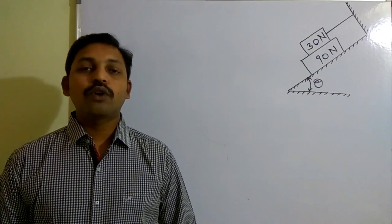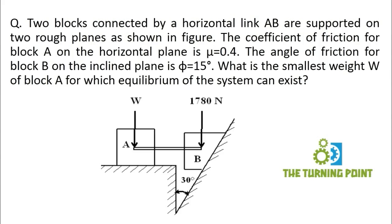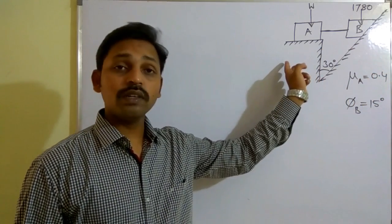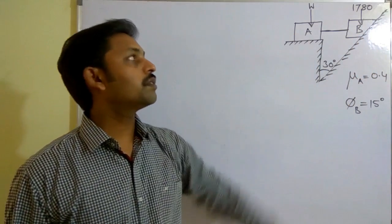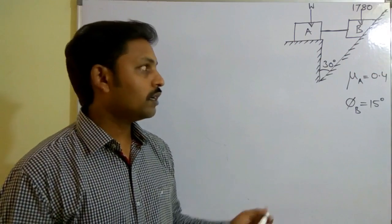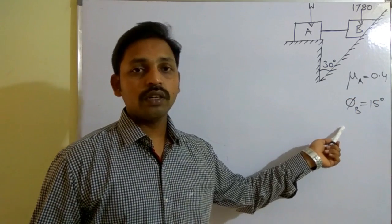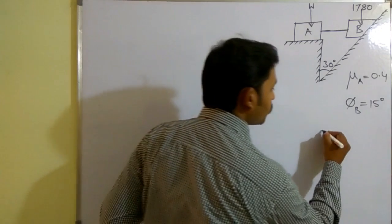Hello everyone, welcome to The Turning Point. In this session let us solve a problem on friction. There are two blocks A and B — one is on an inclined plane and another is on a horizontal plane. They are connected by means of a bar. The weight of block B is given and you are supposed to calculate the weight of block A. The coefficient of friction for block A is given as 0.4, and for block B the angle of friction is given instead of the coefficient directly.